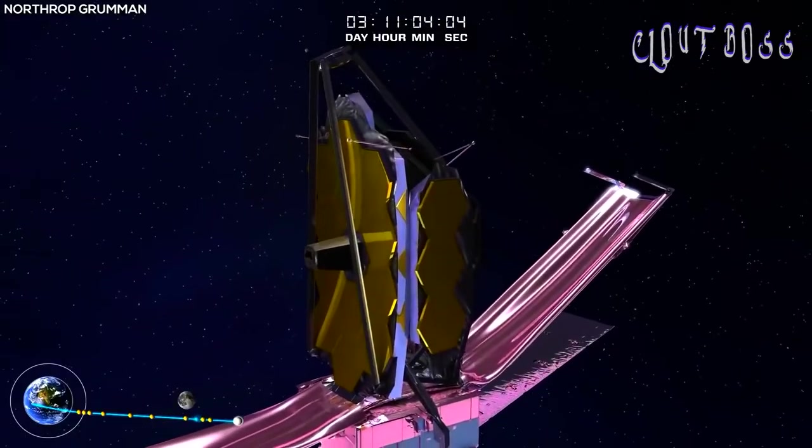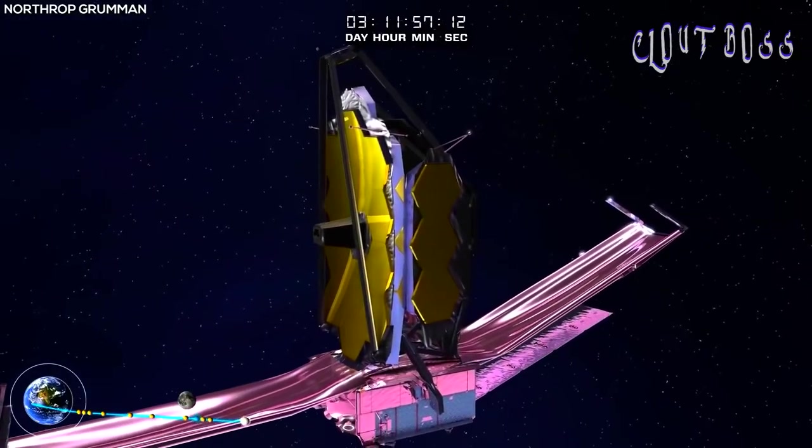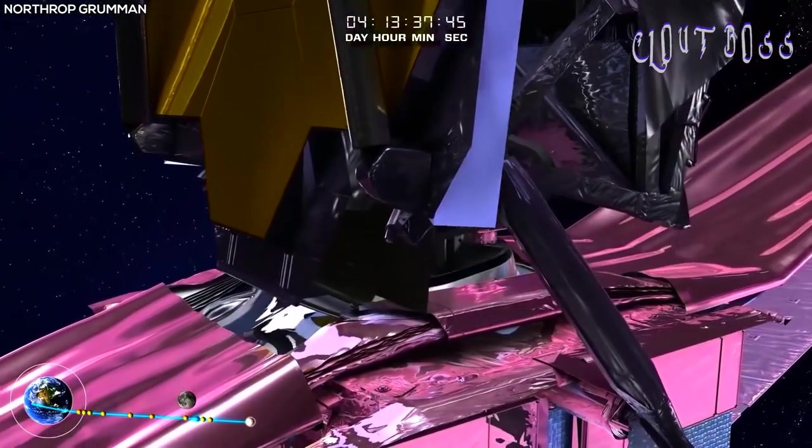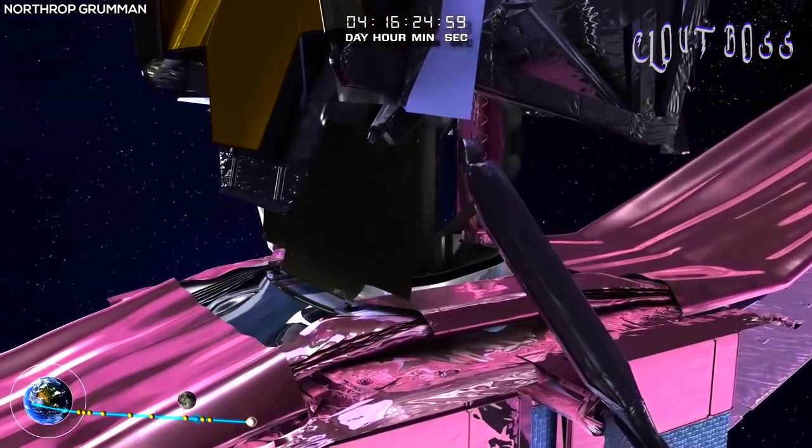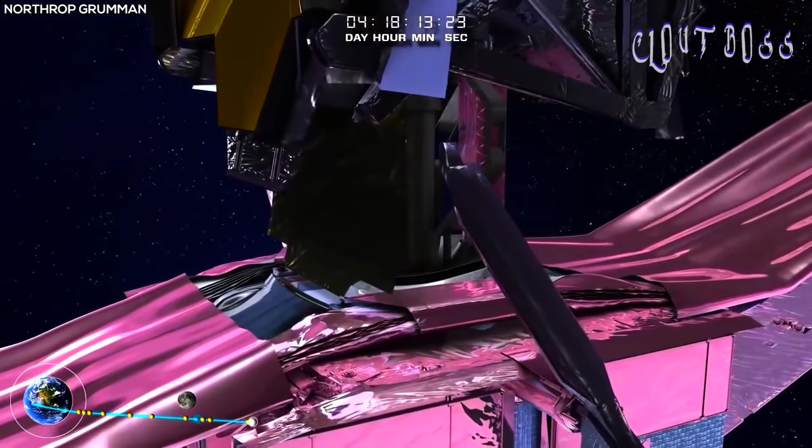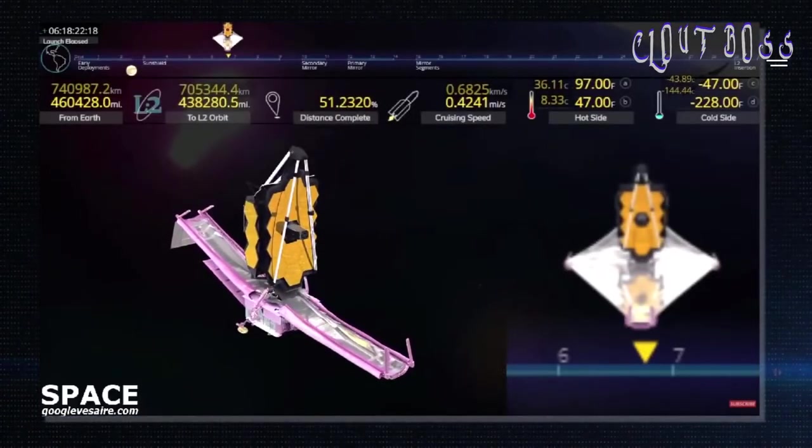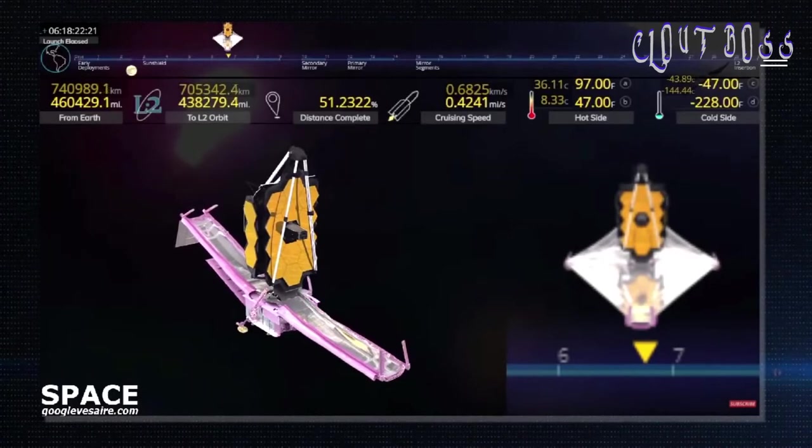The successful completion of all of the Webb Space Telescope's deployments is historic, said Gregory L. Robinson, Webb Programme Director at NASA Headquarters. This is the first time a NASA-led mission has ever attempted to complete a complex sequence to unfold an observatory in space, a remarkable feat for our team, NASA, and the world.